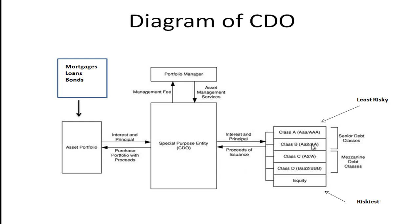You can see different classes are created. There's a Class A which might have a triple-A rating by S&P or Moody's — these are first in line, or most senior, in the event of a bankruptcy. Then there are what are referred to as mezzanine debt classes in the middle, with ratings like A, A2, BAA, BBB, etc. They're not as well-rated as the senior class, but you're probably going to get paid.